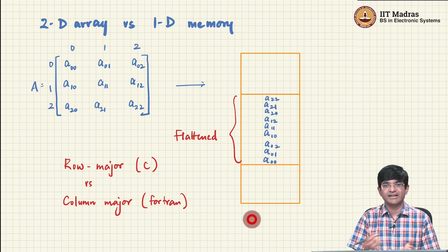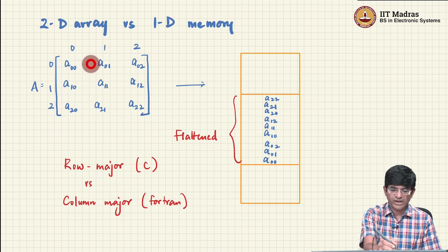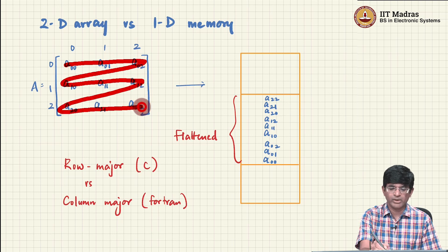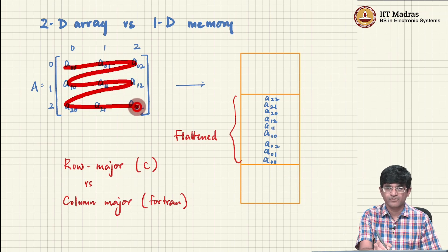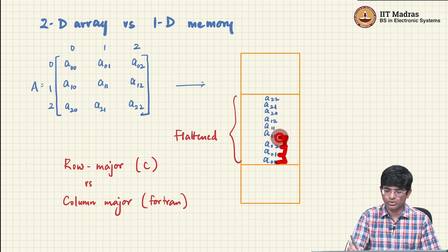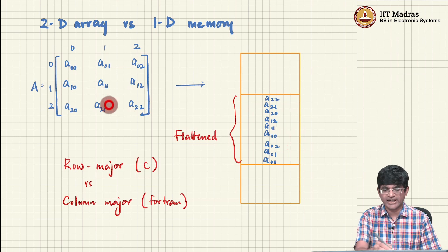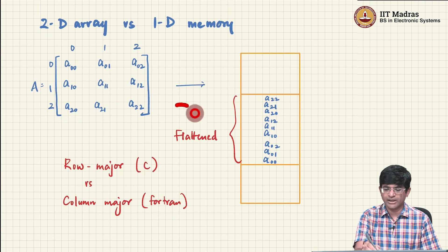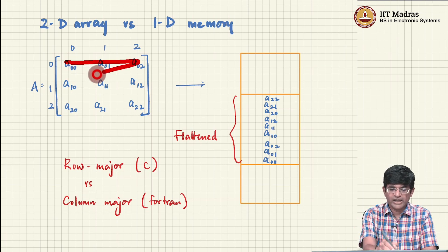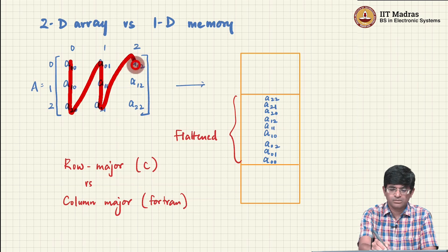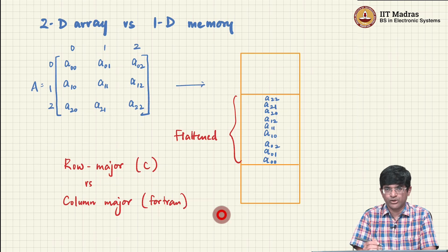What we do is unravel the matrix — that is the simplest way to do it. We take the elements row by row and store them in memory, which is what C does: it flattens the matrix so that a[0][0], a[0][1], a[0][2], then a[1][0], a[1][1], a[1][2], then a[2][0], a[2][1], a[2][2] are stored linearly. There are two ways — row by row or column by column — and both are perfectly valid choices.